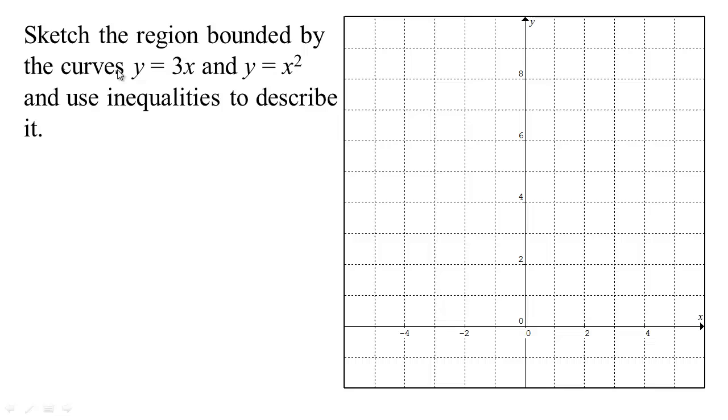Here we want to sketch the region between two curves and then describe it using inequalities. Now the first curve is actually a line, y equals 3x, so it's a line through the origin with slope 3, so I can plot that curve here. We've got 0, 0, and every time you go over 1 you go up 3, so 2, 6, and so on. So we get a line here.